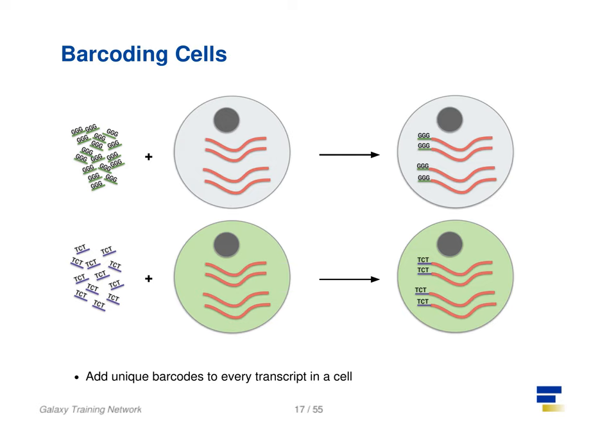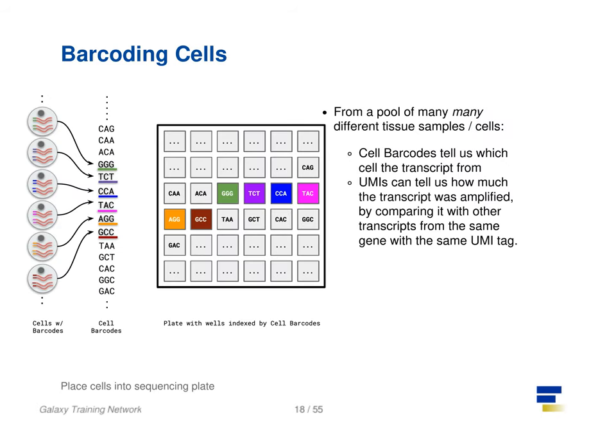Barcodes are unique sequences that are added to each RNA molecule. They are not unique to the molecule, but unique to the cell, such that any two RNA molecules will be tagged by the same cell barcode should they exist in the same cell. RNA molecules from different cells will have different cell barcodes. Once the RNA molecules have been tagged by cell barcodes, they can be amplified, either separately or pooled together, where the amplified products share the same cell barcodes as their original counterparts.